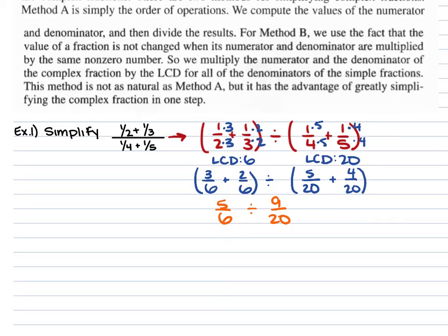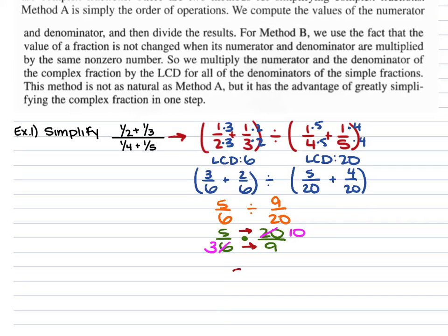Now that we just have our division problem, keep, change, flip. You're going to have 5/6 times 20/9. You can simplify before you multiply: the 6 and the 20 are both divisible by 2, so the 6 becomes 3 and the 20 becomes 10. Multiply straight across: 5 times 10 gives us 50, over 3 times 9 which is 27.